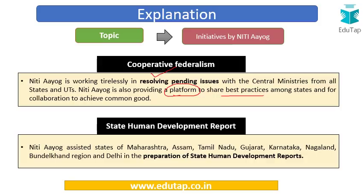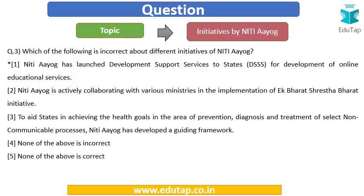NITI Aayog is assisting states including Maharashtra, Assam, Tamil Nadu, Gujarat, Karnataka, Nagaland, the Bundelkhand region, and Delhi in preparing their state human development reports. So the first option — which says DSSS is for online educational services — is incorrect, as DSSS relates to infrastructure development. The answer is option number one.